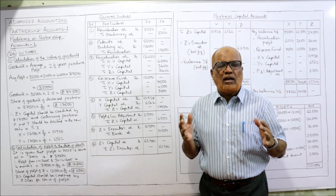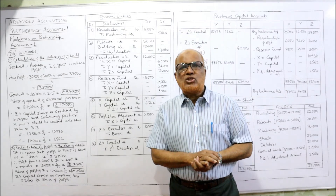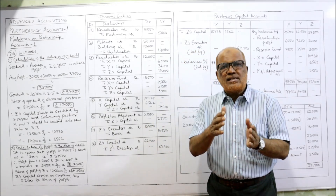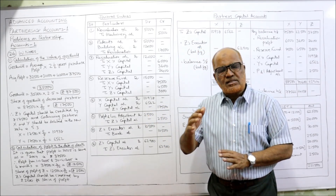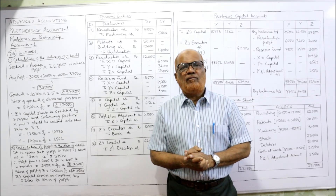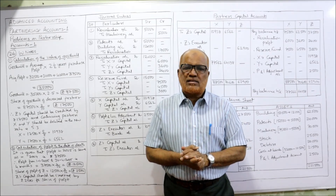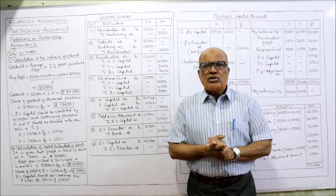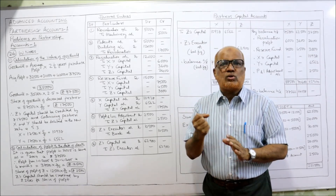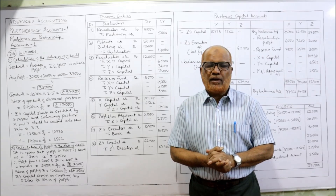In total, 26 main problems and a number of short problems have been covered on partnership accounts one. The next topic will be partnership accounts two, covering dissolution of a partnership firm and sale of a partnership business to a company. Apart from advanced accounting, I have uploaded videos on different topics for B.Com, BBA, M.Com, MBA, and professional examinations like CS and CMA. Visit the playlist, watch the complete videos, and be confident on the topics.